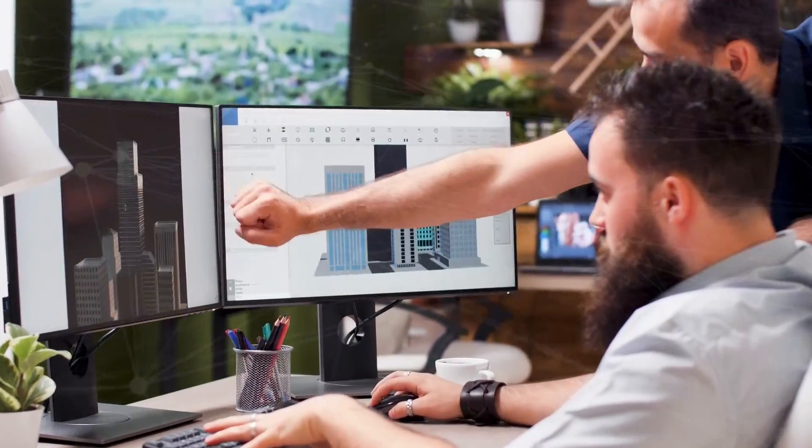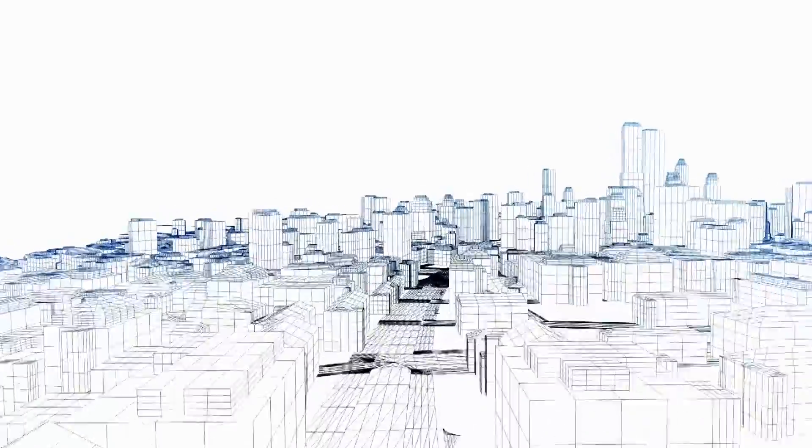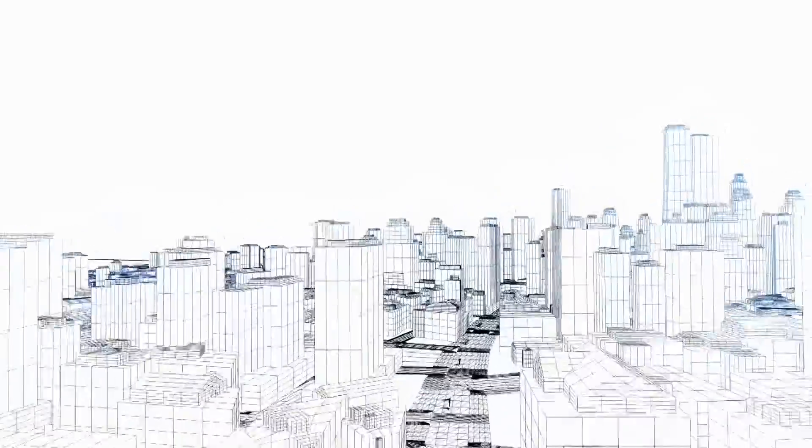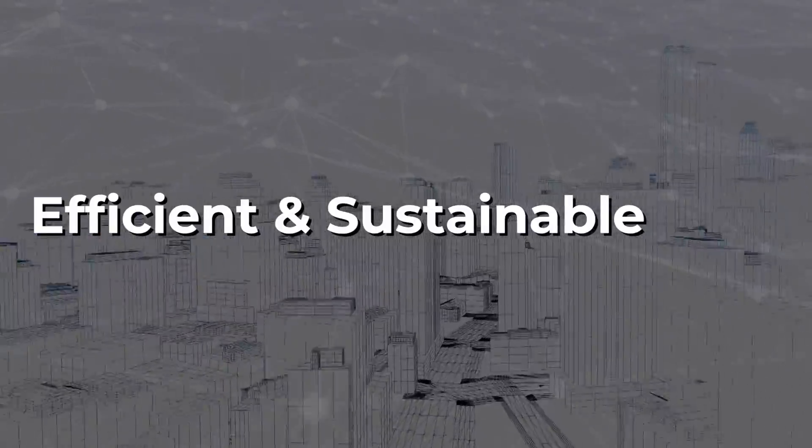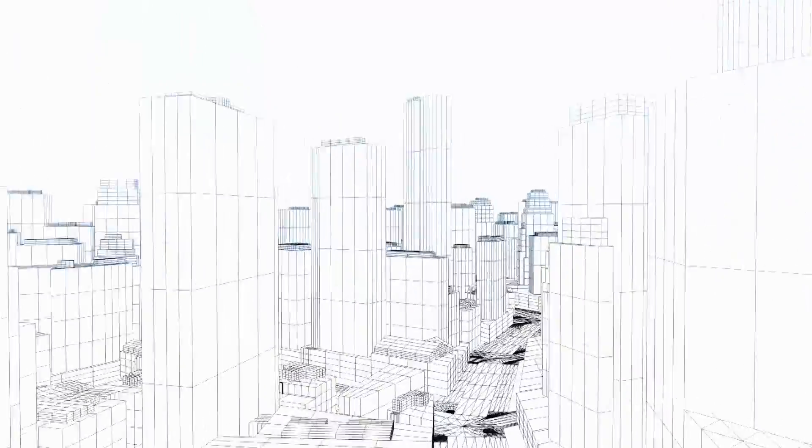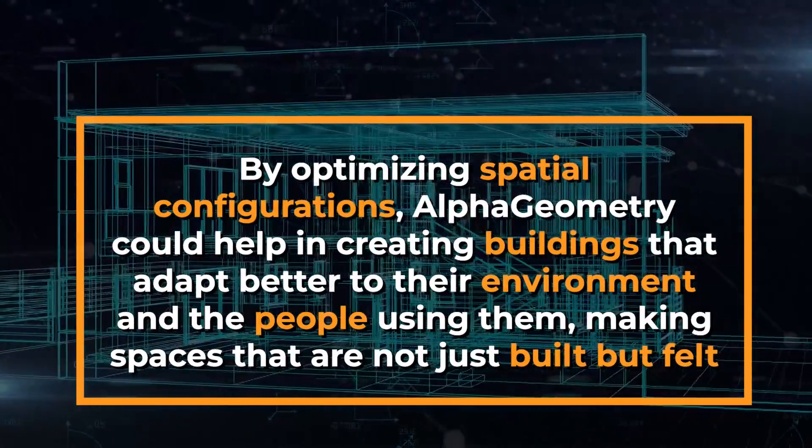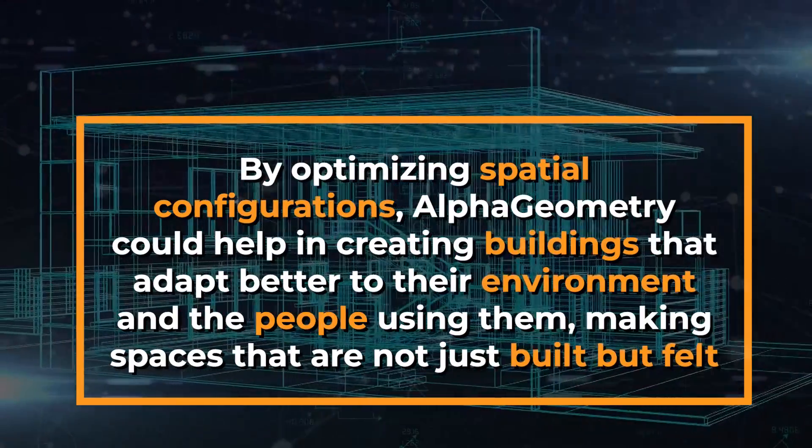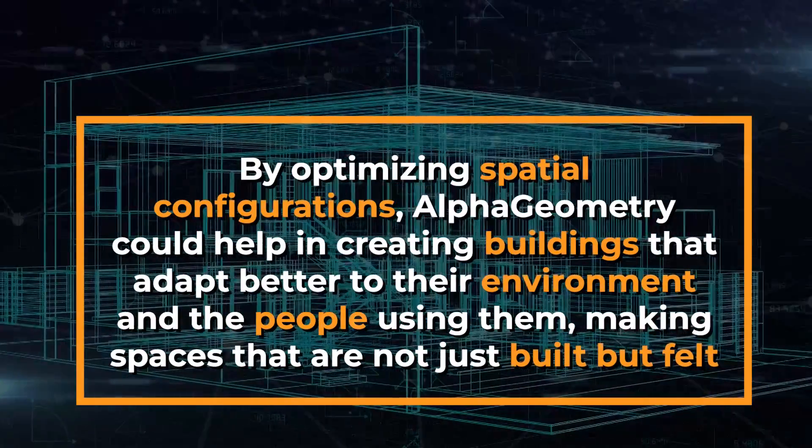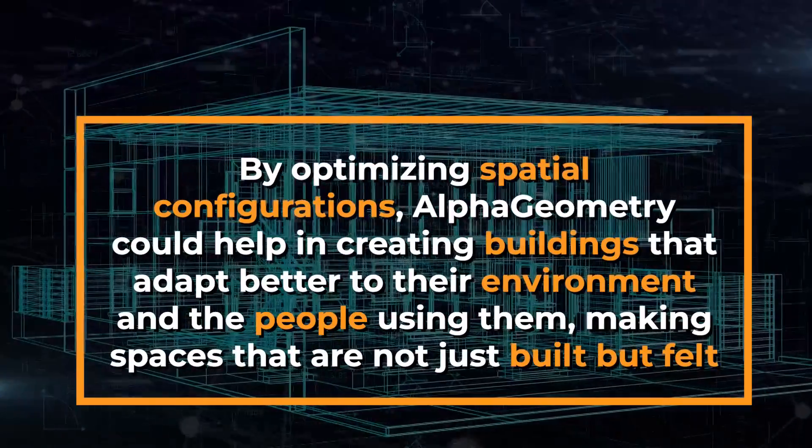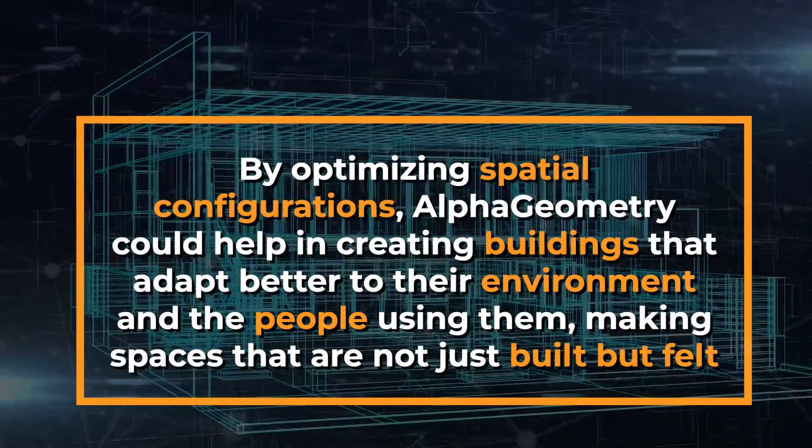In architecture, the implications are both practical and profoundly artistic. Architects could leverage Alpha Geometry to design structures that are not only more efficient and sustainable, but also push the boundaries of aesthetic innovation. By optimizing spatial configurations, Alpha Geometry could help in creating buildings that adapt better to their environment and the people using them, making spaces that are not just built, but felt.